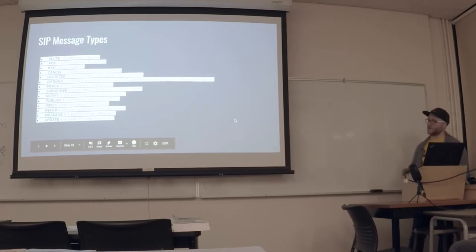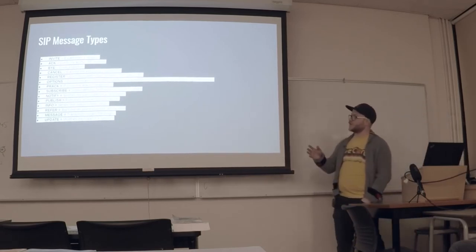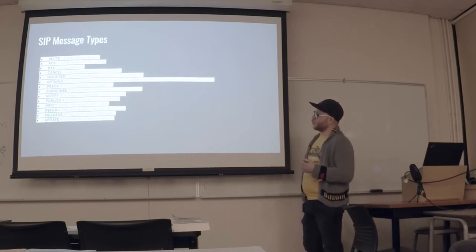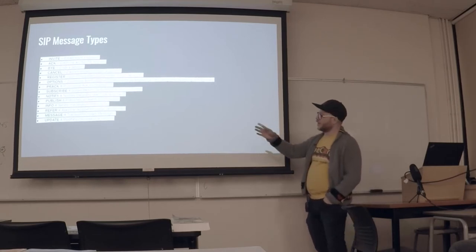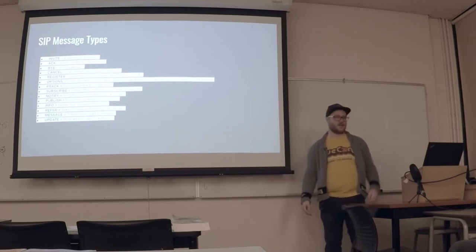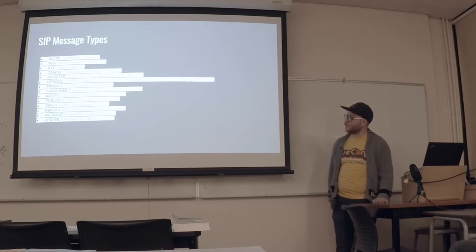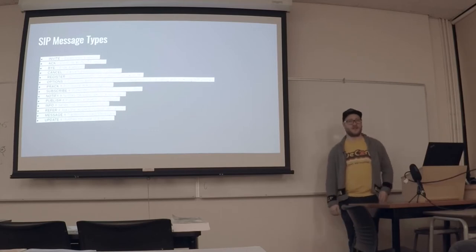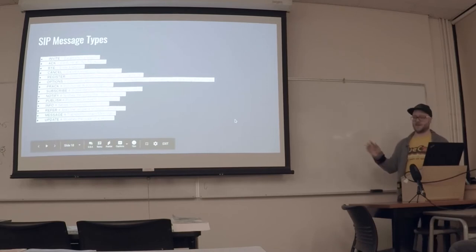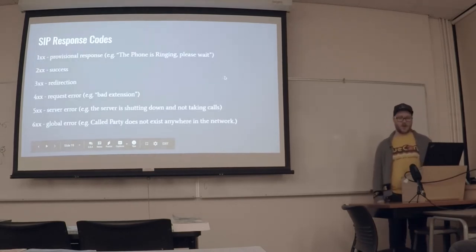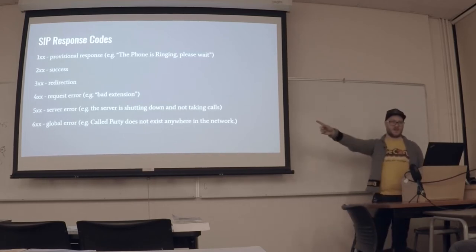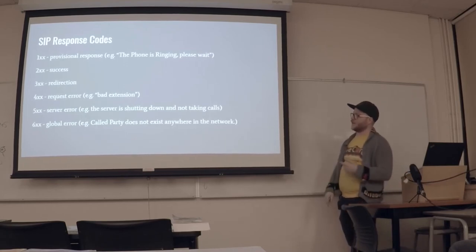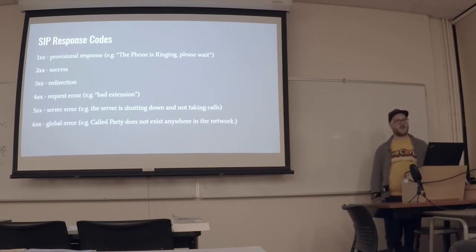So we covered the SIP message types: INVITE, ACK, BYE, CANCEL, REGISTER — which you use to authenticate most of the time — OPTIONS, PRACK (provisional acknowledgement), SUBSCRIBE, NOTIFY, PUBLISH — PubSub-style stuff for sending events through SIP. Really it's the top five you'll see 90% of the time. The response codes are heavily inspired by HTTP: 200-series success, 300-series redirection, 400-series request error, 500-series server error, and 600-series global error. Curiously you don't see many global errors — everyone tends to keep it in the 400 range.